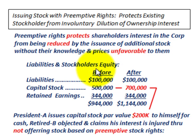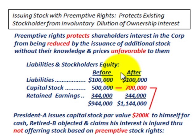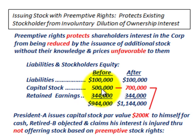We're going to go over a very basic example starting with our liabilities and stockholders' equity. I'm going to be showing before and after here. The before represents what's currently sitting on the books of this closely held company. We have some liabilities here, $100,000 in capital stock of $500,000, and then retained earnings of $344,000.